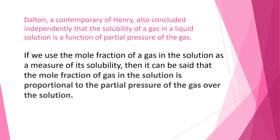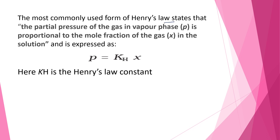Dalton, a contemporary of Henry, also concluded independently that the solubility of a gas in a liquid solution is a function of the partial pressure of the gas. If we use the mole fraction of a gas in the solution as a measure of its solubility, then the mole fraction of gas in the solution is proportional to the partial pressure of the gas over the solution. The most commonly used form of Henry's law states that the partial pressure of the gas in vapor phase is proportional to the mole fraction of the gas in the solution, represented as small x, and is written as p = KH·x, where KH is the Henry's law constant.